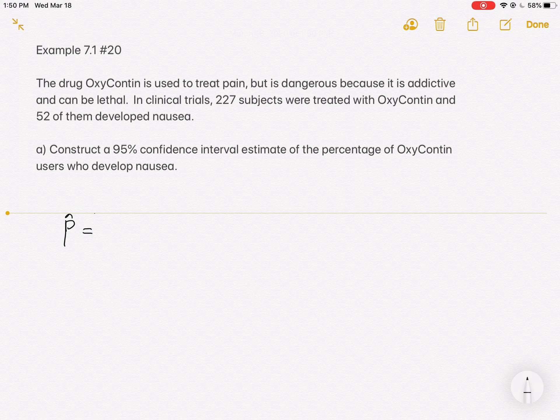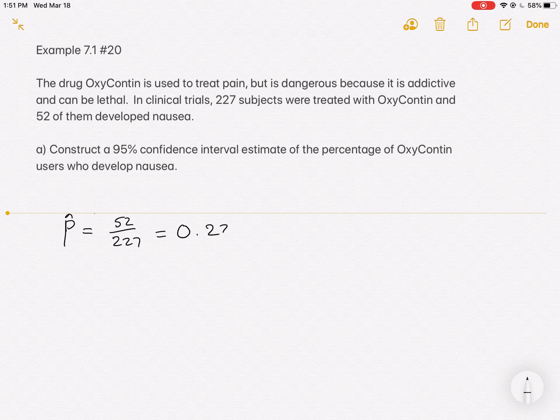What was the nausea rate for the subjects that were given the OxyContin in the clinical trials? It was 52 out of 227. And when you run 52 divided by 227 on your calculator, you get out to three significant digits, 0.229.